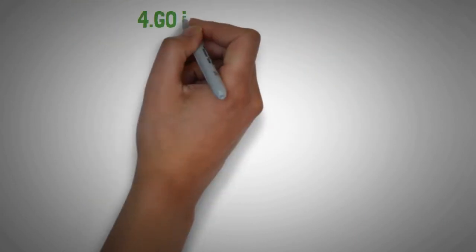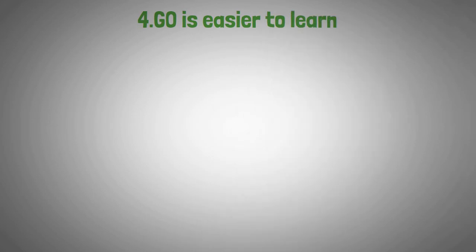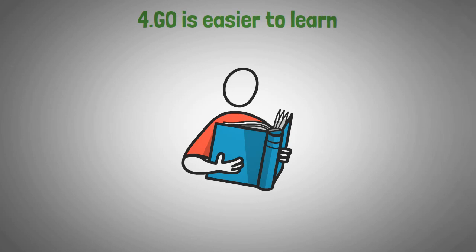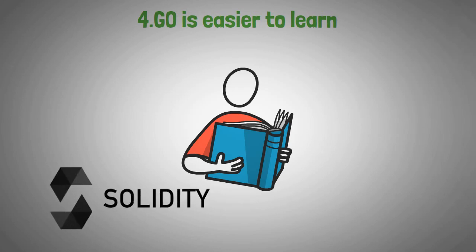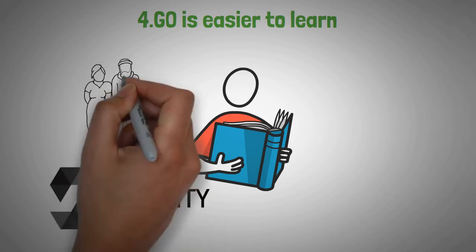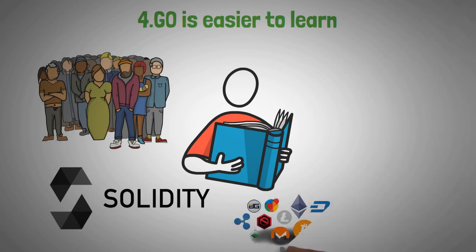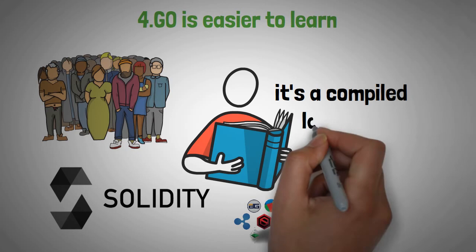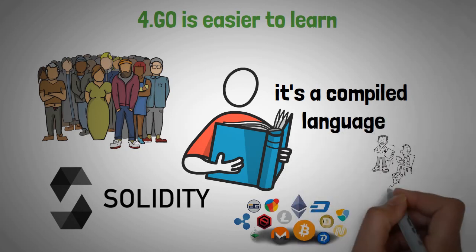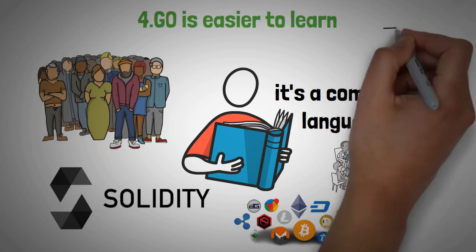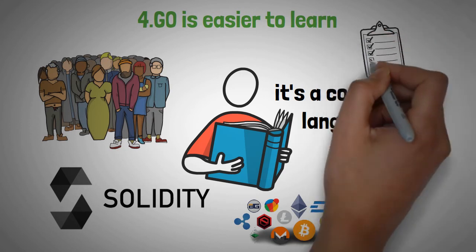Lastly, Go is easier to learn. If you're a beginner programmer, learning Golang will be a lot easier than learning Solidity. The developers of PulseChain were originally writing its code in Solidity, but it's becoming outdated as more and more developers are learning Go — a trend seen across the overall cryptocurrency industry. One of the reasons people find Go easier is that it's a compiled language, meaning that as developers write code, the Go compiler is constantly checking for errors and will let the programmer know right away so they can fix them.